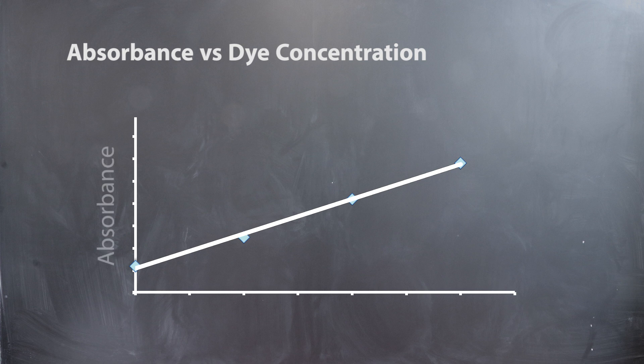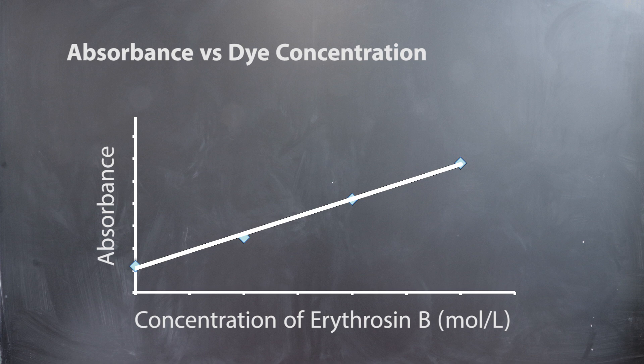Next you should plot a graph of absorbance with respect to the concentration of dye to calculate the molar absorptivity of erythrosine B. The molar absorptivity will be the slope of the graph.